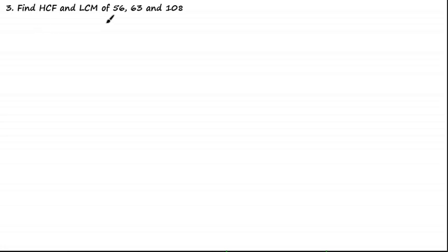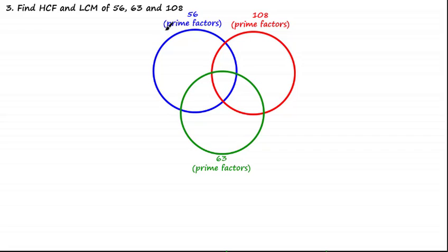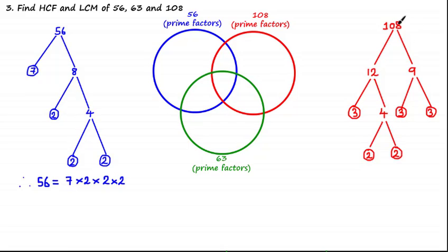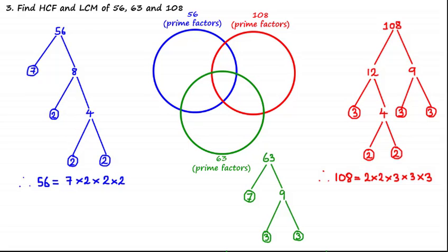Find the highest common factor and the lowest common multiple of 56, 63 and 108. As we have three numbers, we're going to use a three-way Venn diagram. Using the factor tree method: 56 can be written as 7 times 2 times 2 times 2; 108 can be written as 2 times 2 times 3 times 3 times 3; and 63 can be written as 7 times 3 times 3. We shade the central region to contain all prime factors that 56, 108 and 63 share in common.